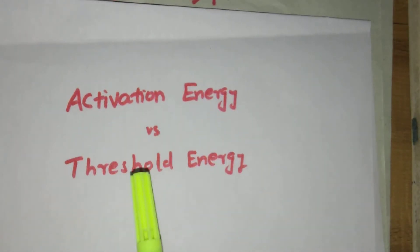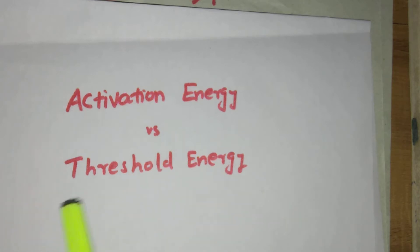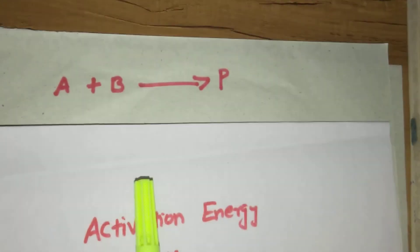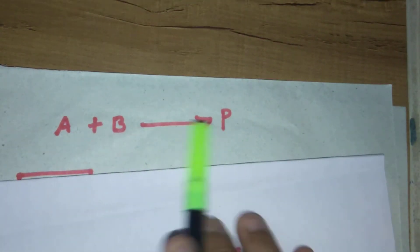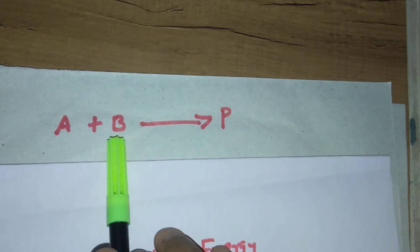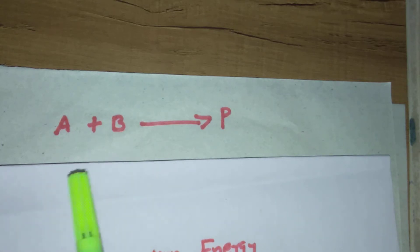Today's topic is activation energy versus threshold energy. Consider a chemical reaction: A plus B gives products. A and B are the reactants and P is the product. What is the activation energy and what is the threshold energy of this chemical reaction? I am going to explain this with a practical example so you can easily understand the concept.